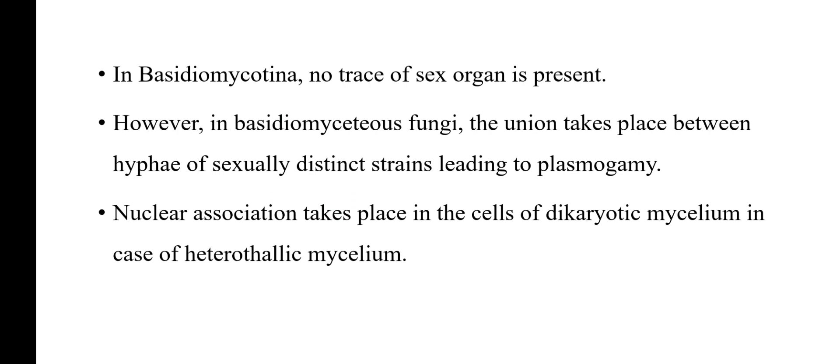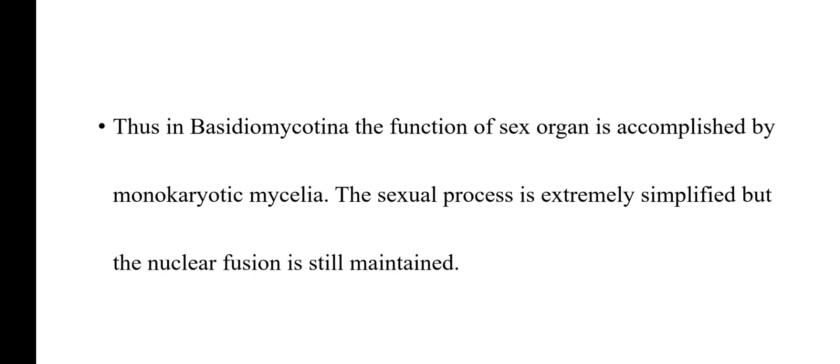In Basidiomycetes, there is no trace of sex organ present. However, in Basidiomycetes fungi, the union takes place between hyphae of two sexually distinct strains, leading to plasmogamy. Nuclear association takes place in the cells of dikaryotic mycelium in the case of heterothallic mycelium. Dikaryotic condition means two nuclei present in one cell. Thus, in Basidiomycotina, the function of sex organs is accomplished by monokaryotic mycelia. The sexual process is extremely simplified, but nuclear fusion is still maintained.